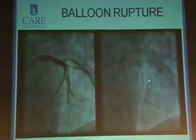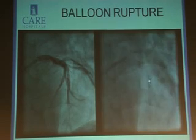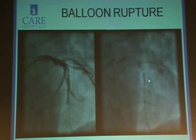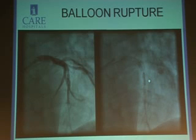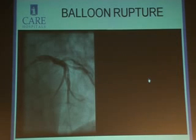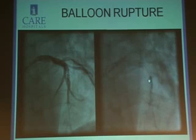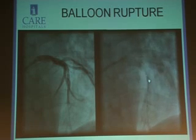The moment the balloon started inflating, you can see that the contrast has gone distally — an important point: always keep a watch on how the balloon is inflating. The first clue that dye is going distally indicates the balloon has ruptured. This was around 3 atmospheres, and at 12 o'clock at night when you're alone with junior staff, that pressed some panic buttons. We immediately tried to inflate as much as possible, knowing we were going to land into a difficult situation.